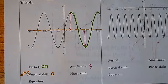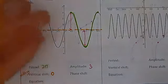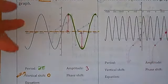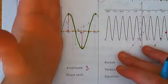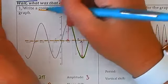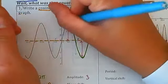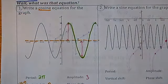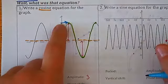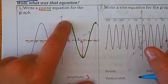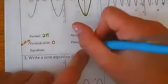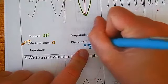The last thing to fill out is the phase shift. How do you know if there's a phase shift? If the sine or cosine graph does not start on the y-axis. Since this is a cosine graph, did the top of the smile start right at the y-axis? No. I see it went over to the right by π/2. So my phase shift is right π/2.